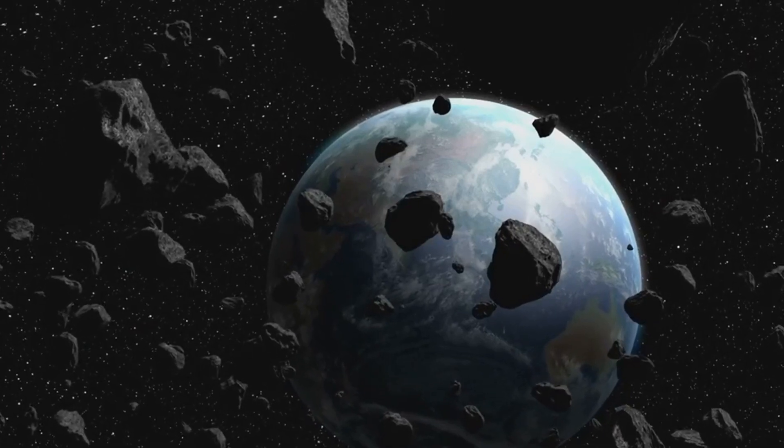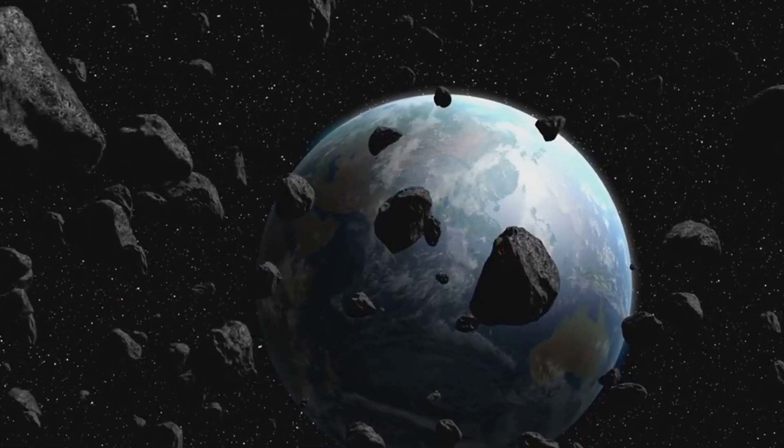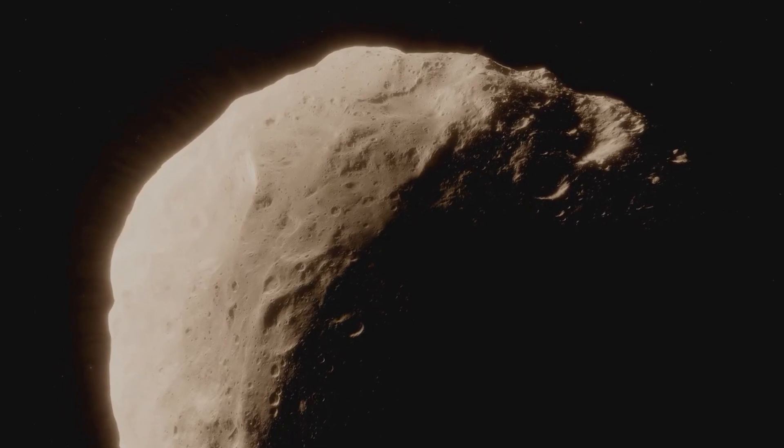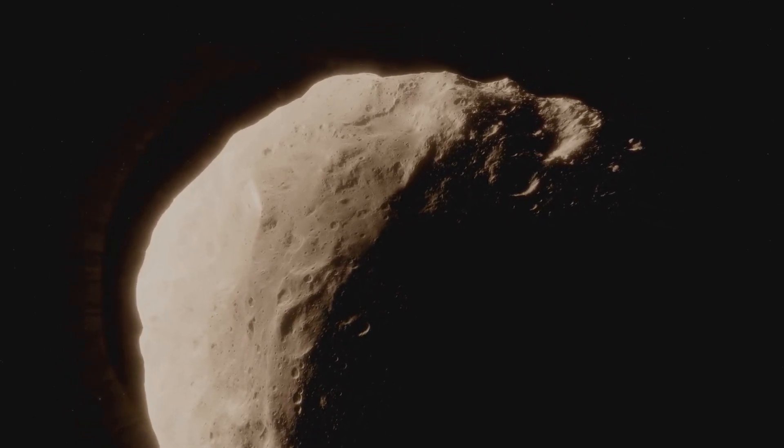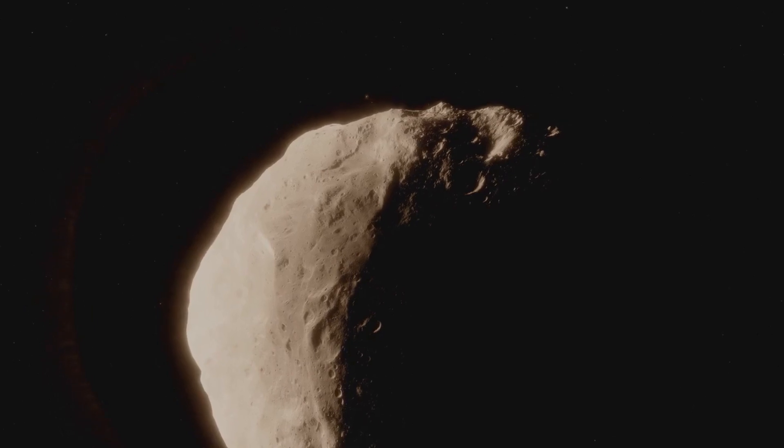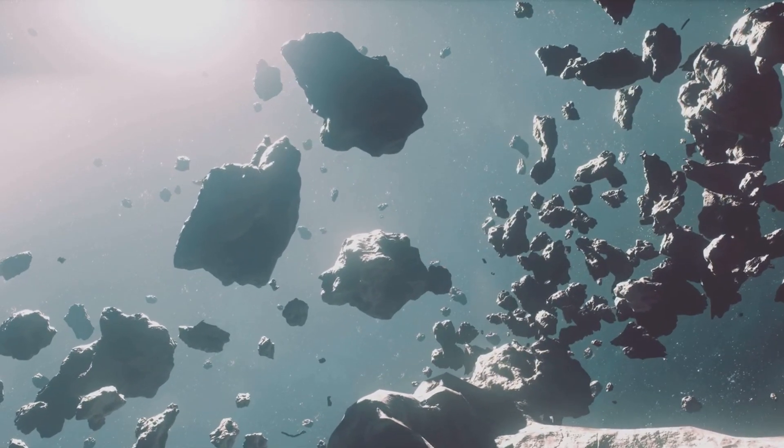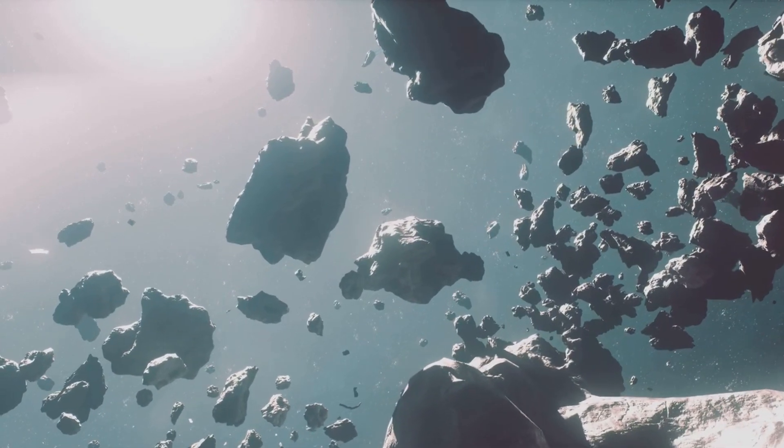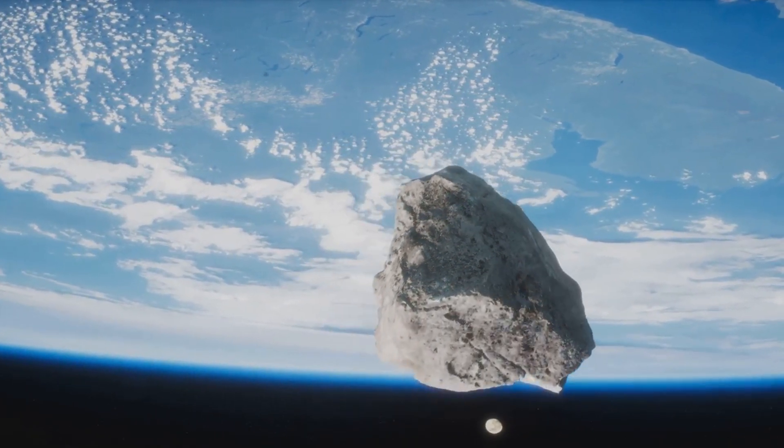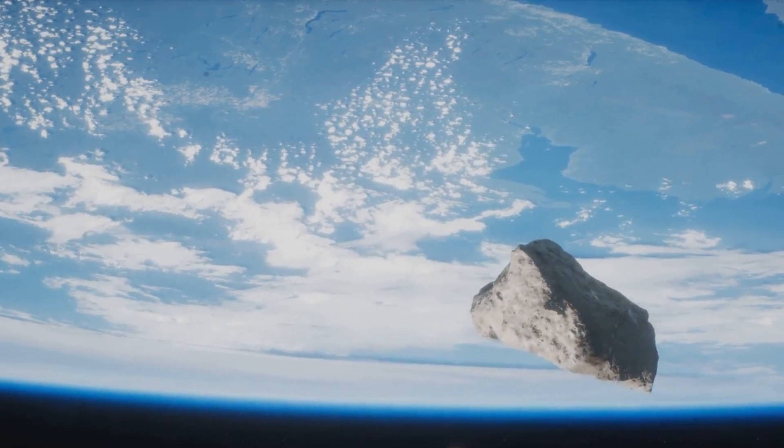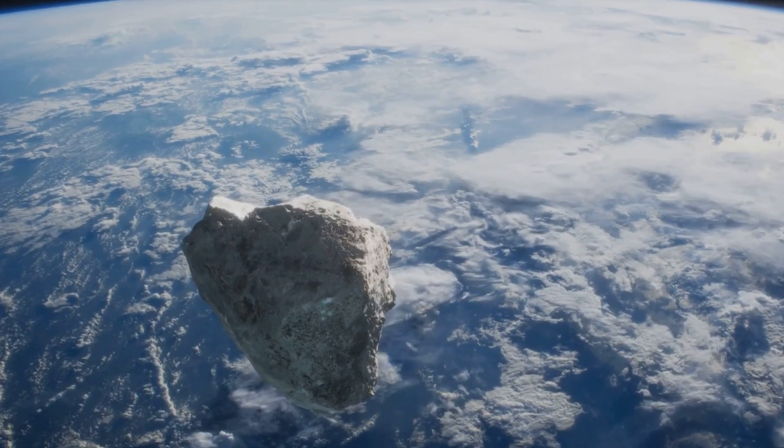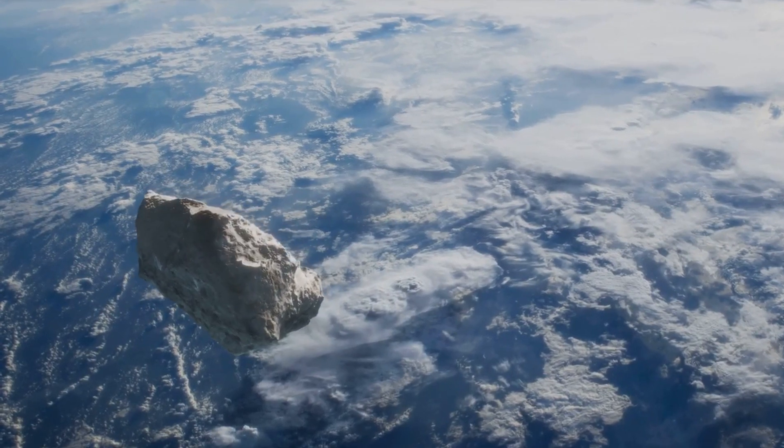These factors, often minute and immeasurable from our vantage point on Earth, can lead to predictions that are off by thousands, even millions of miles. Our technology is improving. And with each passing year, we become better at spotting potential threats. But it's not just about identifying asteroids, it's about understanding their behaviour. Each asteroid is unique with its own composition, size and shape, all of which can affect its trajectory and potential impact. This is why continued research and vigilance are of paramount importance. We need to keep our eyes on the sky, scanning the cosmos for potential threats. We need to invest in technology that can give us a better understanding of these celestial bodies and in defence strategies that could one day save our planet.